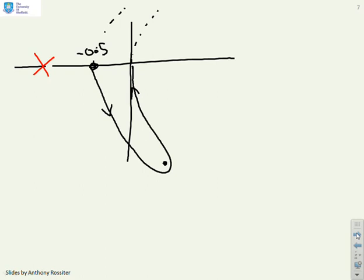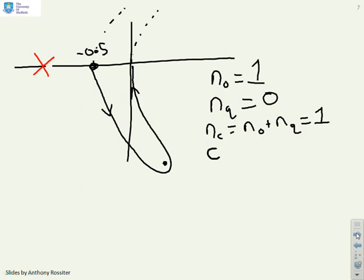To assess closed loop stability: for this system NO equals one, there is one open loop right half plane pole. We have NQ equals zero. Therefore NC equals NO plus NQ equals one. The closed loop is unstable with one closed loop right half plane pole.